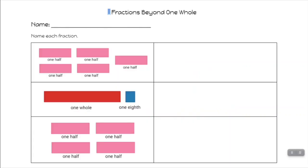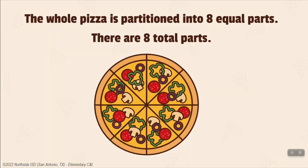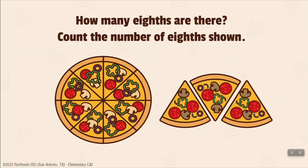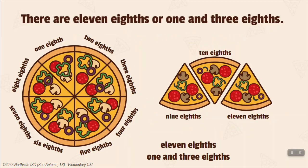Students can use the fractions beyond one whole student sheet to continue naming fractional parts beyond one whole. Students will use area models to count fractional parts beyond one whole. The whole pizza is partitioned into eight equal parts — the pizza has been partitioned into eighths. Students should count the fractional parts and recognize that eight eighths compose one whole. When presented with fractional parts beyond one whole, students count to determine the number of eighths represented. There are eleven eighths. Eight eighths compose one whole, therefore eleven eighths is the same as one and three eighths. Repeat this process with halves and fourths and allow students time to practice representing fractions beyond one whole using area models.